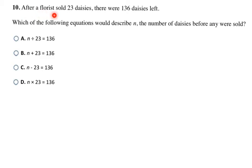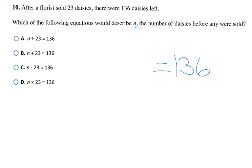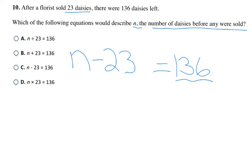After a florist sold 23 daisies, there were 136 daisies left. Which equation describes N, the number of daisies before any were sold? At the end there were 136 daisies left, so whatever we do equals 136. N is the starting amount, 23 were sold, so N − 23 = 136. My final answer is C.